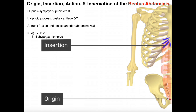You have to have an origin and you have to have an insertion, but just understand that depending on the nature of the contraction, sometimes the origin can actually move towards the insertion, and sometimes the insertion can move toward the origin. We're actually going to talk about how that applies here in the rectus abdominis. Also notice, as we go through this, that the nerve supply to all of these is identical.